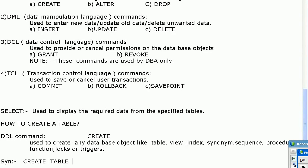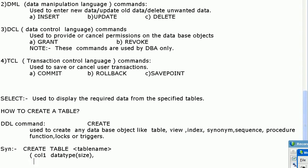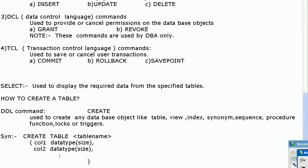The syntax for creating a table is: CREATE TABLE followed by the table name. Since a table contains a set of columns, the column names must be specified within parentheses: column1 with its data type and size, comma, column2 with its data type and size, and so on. Close the parenthesis and use a semicolon, because each query is terminated with a semicolon.